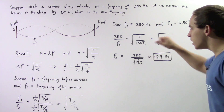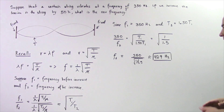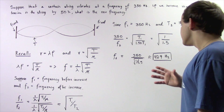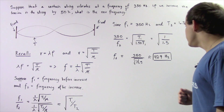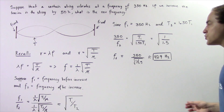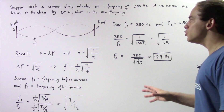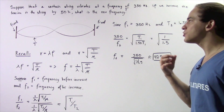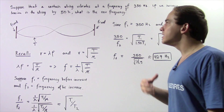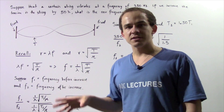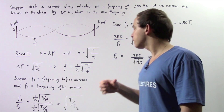If we plug this into the calculator, we get 350 divided by about 0.86, and we get approximately 429 Hz as the new frequency. So we see that if we increase the tension in our cord by 50%, our frequency goes from 350 to 429 Hz.